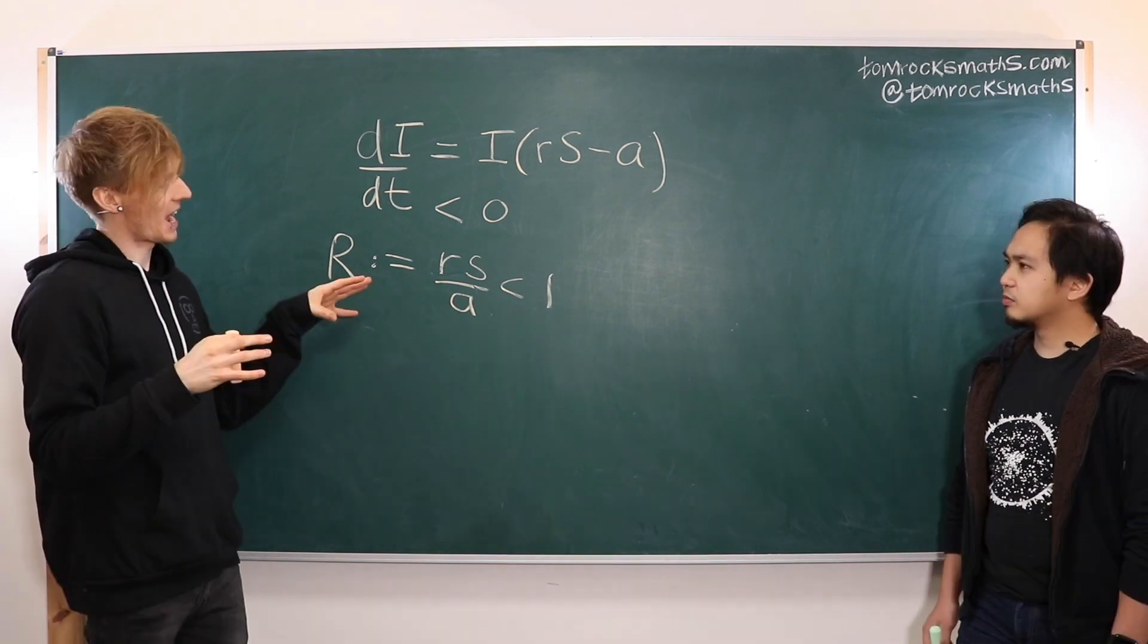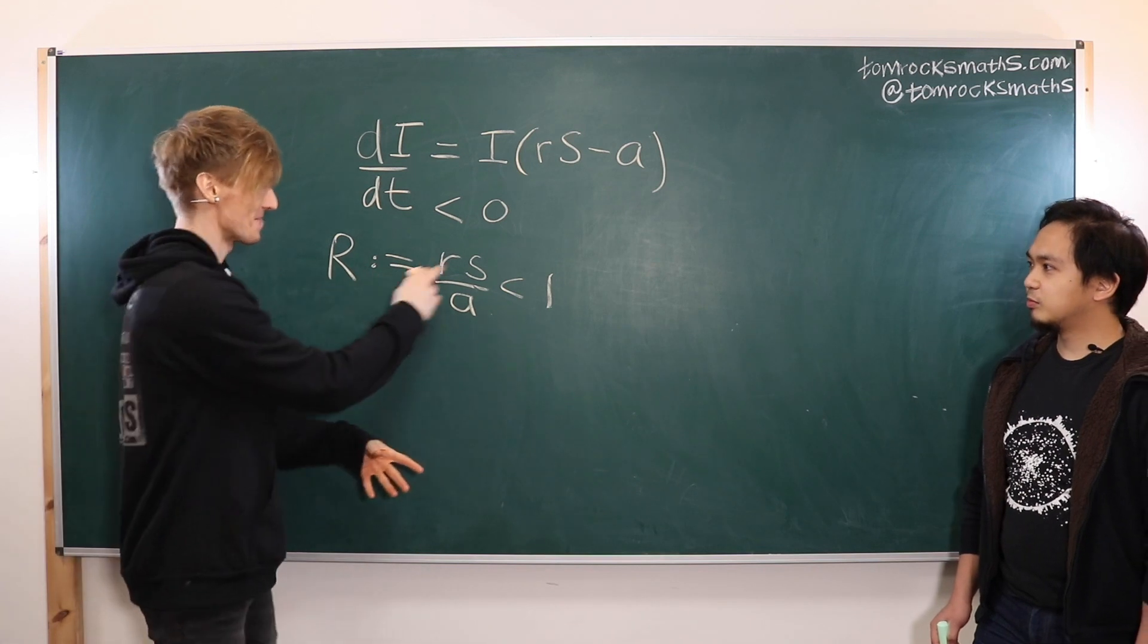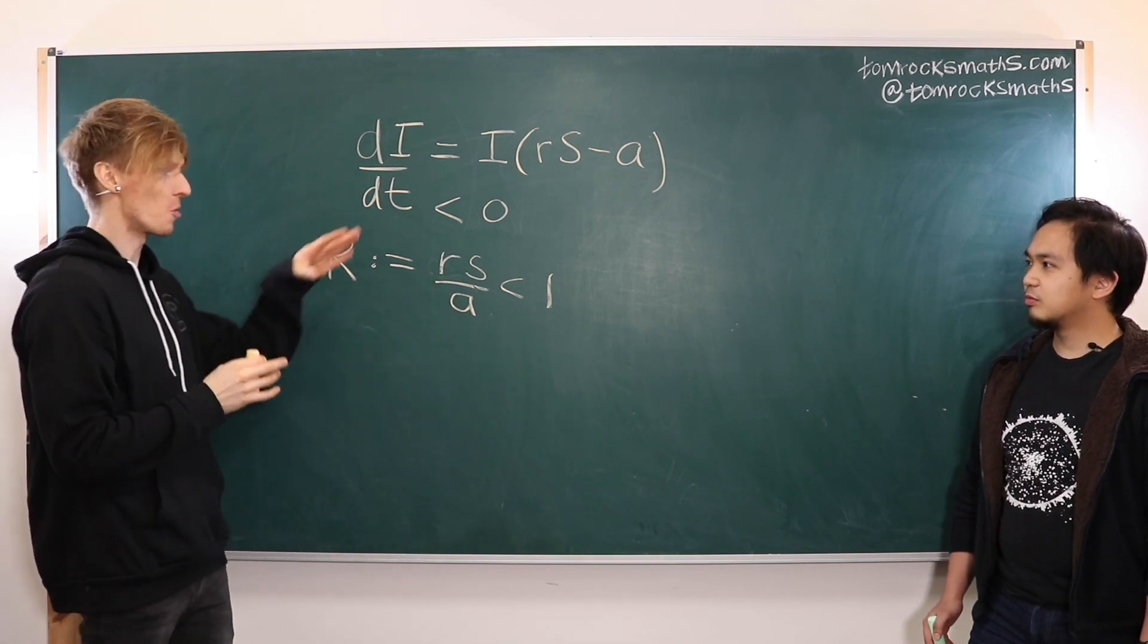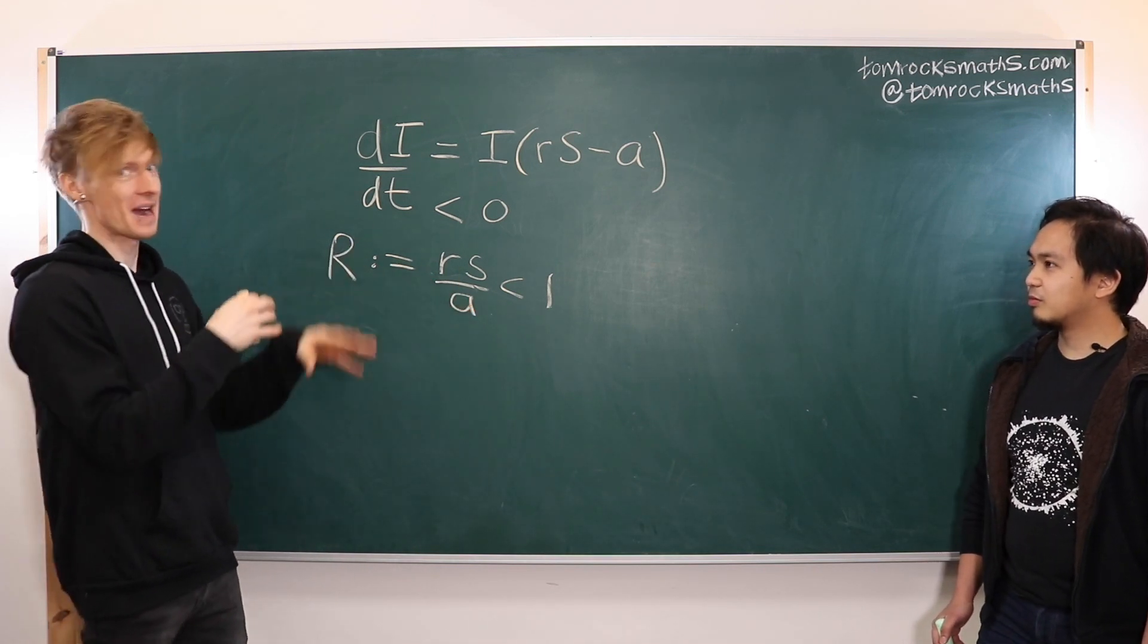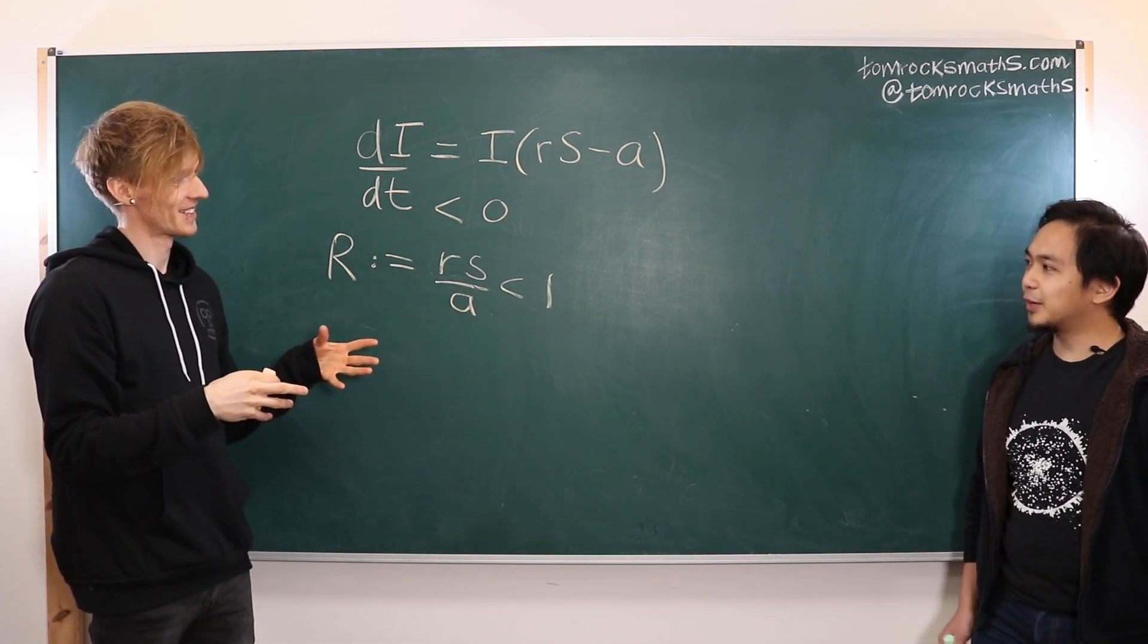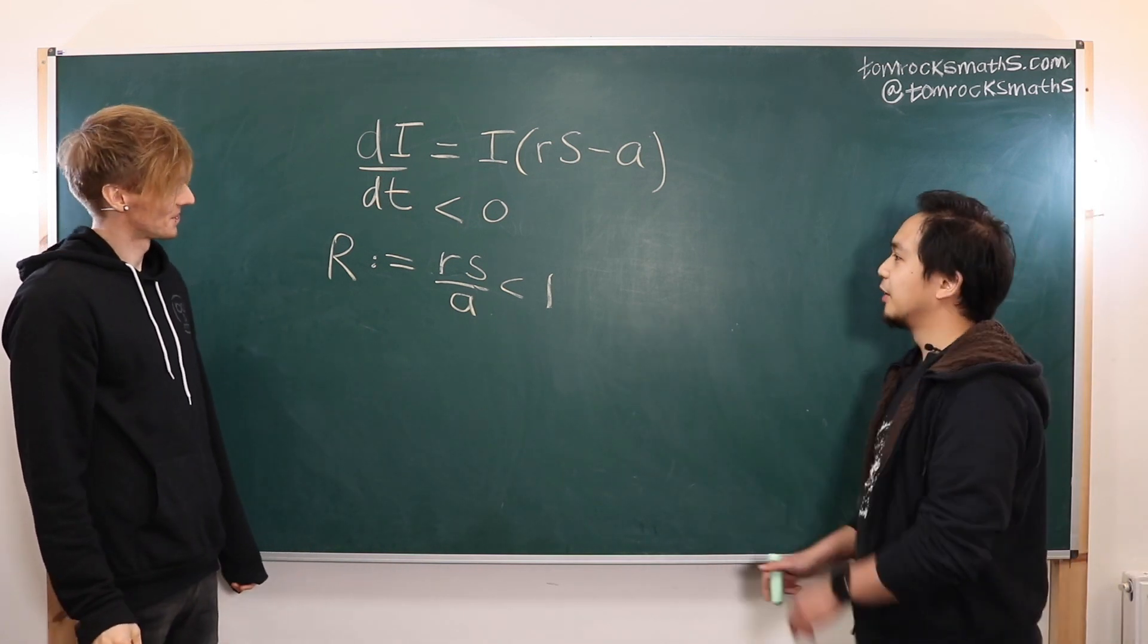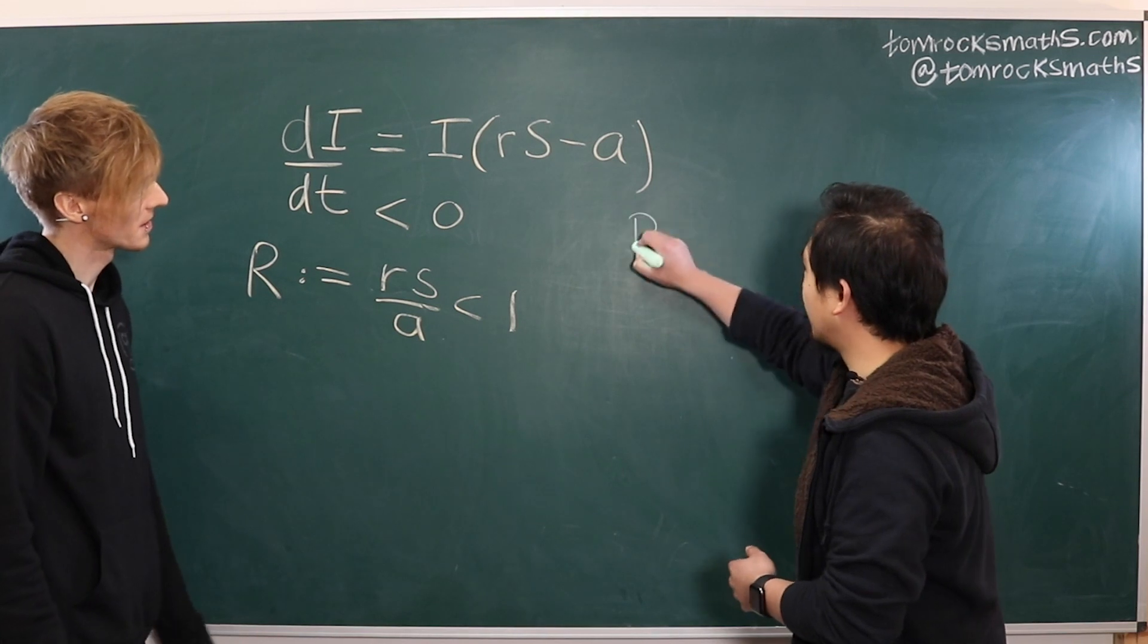So really what we would like to do is to try to get s, the number of susceptible people down so that when we return to normal life and go to our jobs and go to our schools and see our families that we won't risk the epidemic blowing up again and that's where vaccines come in because vaccines can effectively reduce s such that R stays below one even if we go back to normal life.